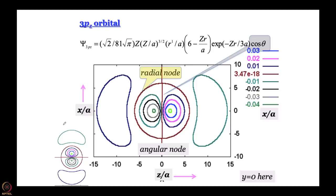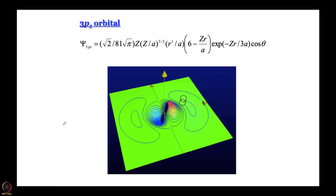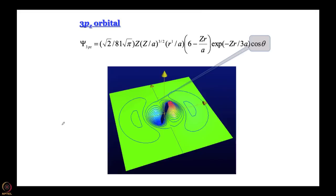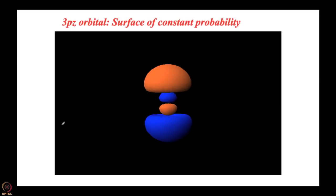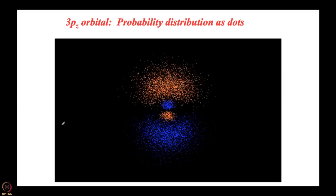This gives the contour diagram for 3pz, shown here in a different orientation, and the beautiful 3D contour plot. The inner lobes of the orbital are much larger in magnitude — the outer lobes are very shallow and it can be difficult to draw their contours. However when you incorporate the volume element, the outer lobes become the major lobes in probability terms. The cos θ = 0 plane is the angular node. This surface of constant probability for the 3pz orbital can also be shown as a dot distribution diagram. In the next module we will discuss d orbitals.